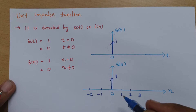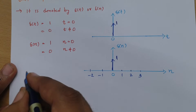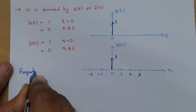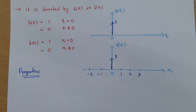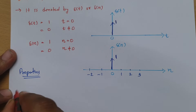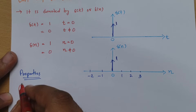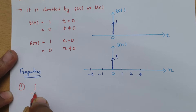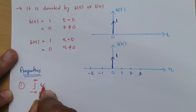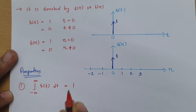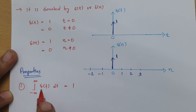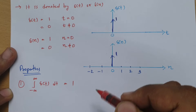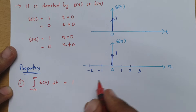Now let us discuss a few essential properties of the unit impulse function. The first property is: if you integrate the impulse function from minus infinity to plus infinity, that will always be unity. So the integration of δ(t) dt from −∞ to +∞ equals 1. Remember this — the integration of the impulse function is unity.